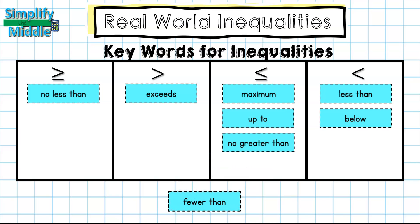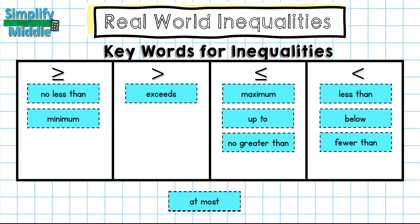'No greater than' is less than or equal to. 'Fewer than' goes under less than. 'Minimum' is greater than or equal to — for instance, you must be a minimum of a certain height to enter an amusement park ride, meaning you could be exactly that height or taller, but not smaller.